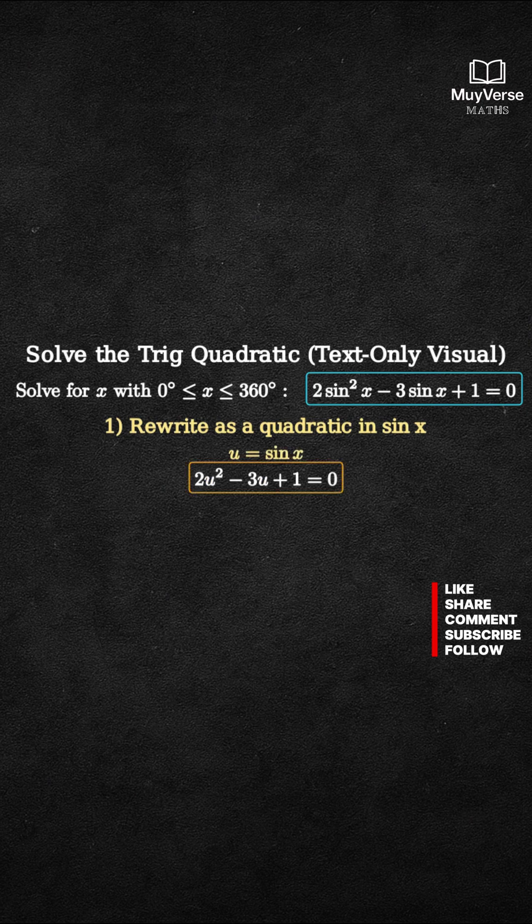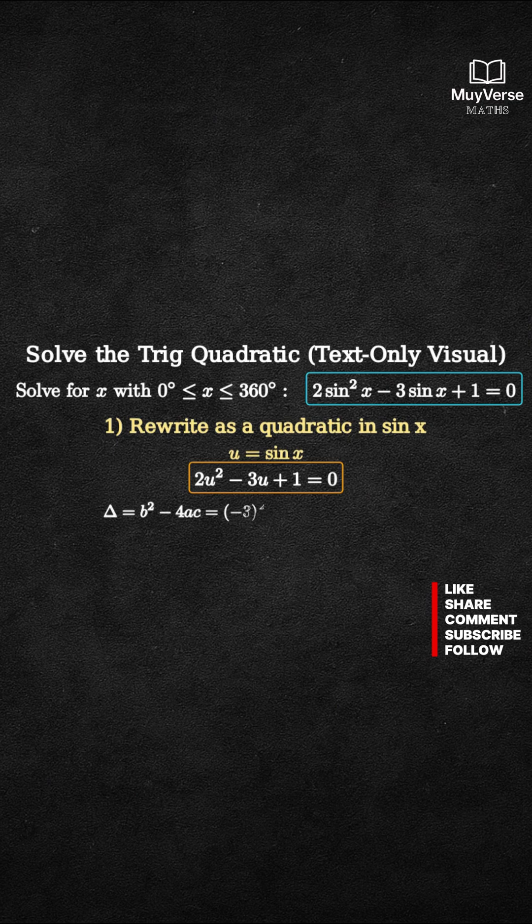Step 2. Solve the quadratic. Compute the discriminant. Delta equals negative 3 squared minus 4 times 2 times 1, which is 9 minus 8 equals 1.